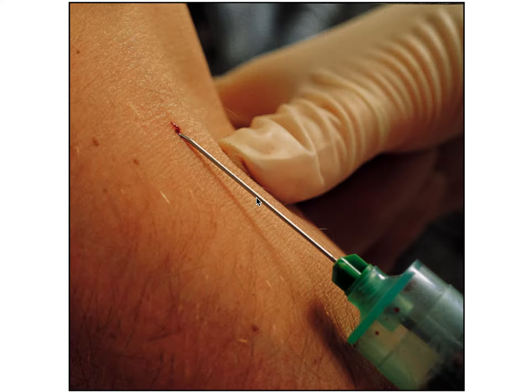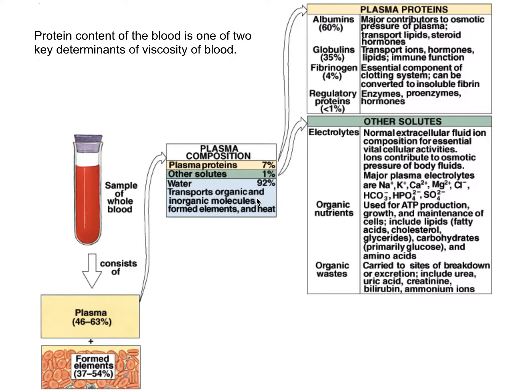Hi guys. Let's start off with cardiovascular. We're going to do blood first. This is the components of blood. Blood is divided into two parts: you have plasma and you have the formed elements.